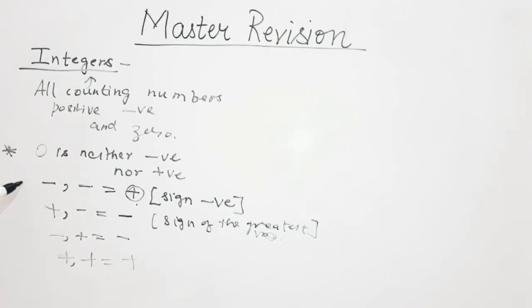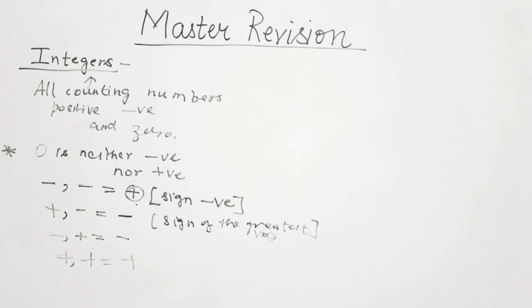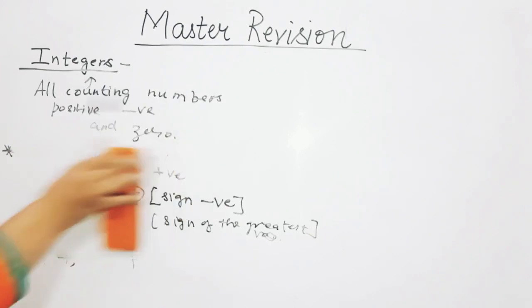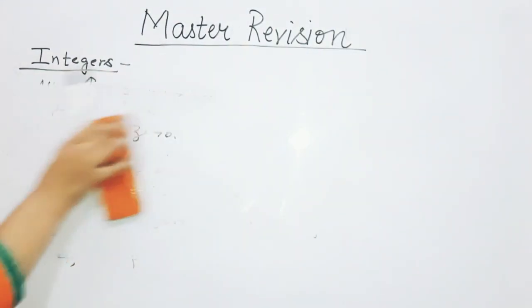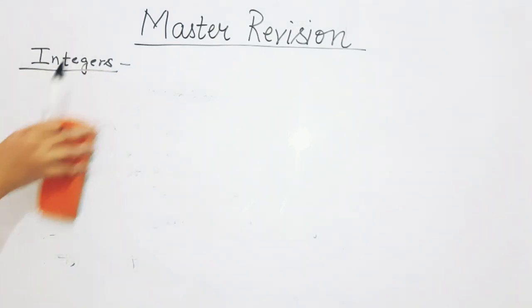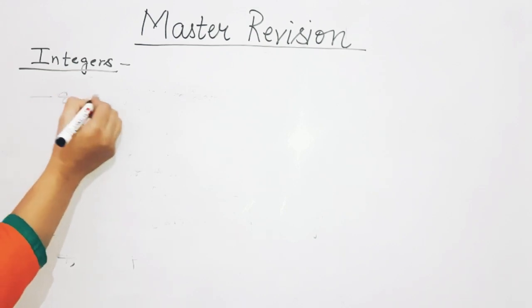You have to remember these four rules — they will help you everywhere: minus minus gives negative sign; plus minus gives sign of the greatest number; minus plus also gives sign of the greatest number; plus plus gives positive. Now I will be taking some examples — it's a rapid fire, so you have to reply fast. Pause the video and reply in the comment section.